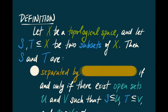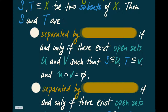Let X be a topological space and consider two subsets S and T of X. We're going to talk about S and T being separated by various kinds of structures. First, we'll say that S and T are separated by neighborhoods if and only if there exist open sets U and V such that S is contained in U, T is contained in V, and U and V are disjoint. You can see that if points are separated by neighborhoods, that's exactly the condition to be Hausdorff.